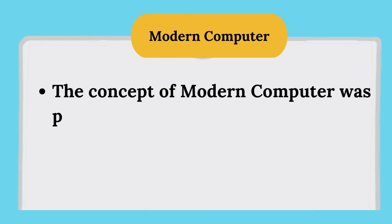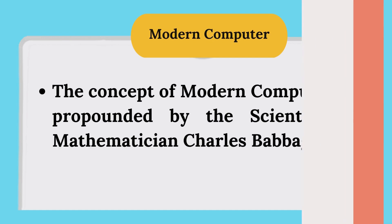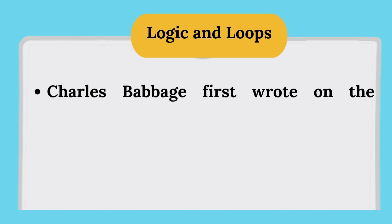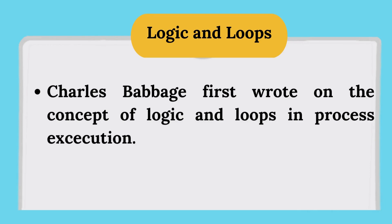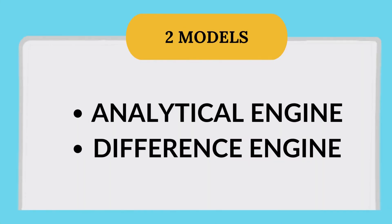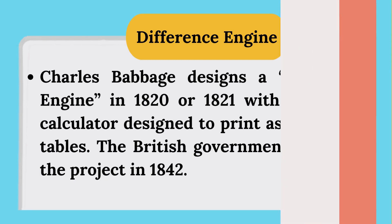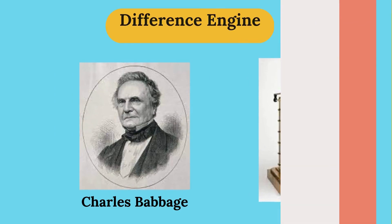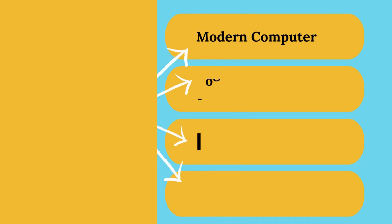The concept of the modern computer was propounded by scientist and mathematician Charles Babbage. He first wrote on the use of logic and loops in process execution. Based on these concepts, Babbage envisaged two models: the Analytical Engine and the Difference Engine. He designed the Difference Engine in 1820–1821 as a massive calculator to print astronomical tables, but the British government cancelled the project in 1842. He then conceived the Analytical Engine, a mechanical computer that could solve any mathematical problem using punch cards and modern computer logic and loops.